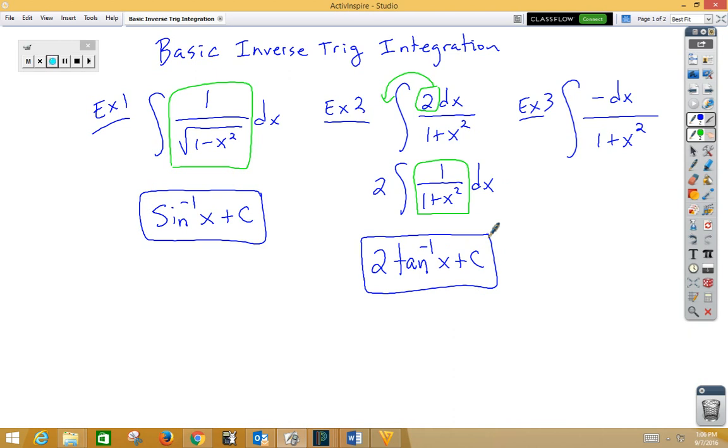In example 3, we have a negative 1 dx, so let's go ahead and call that inverse cotangent of x plus c.